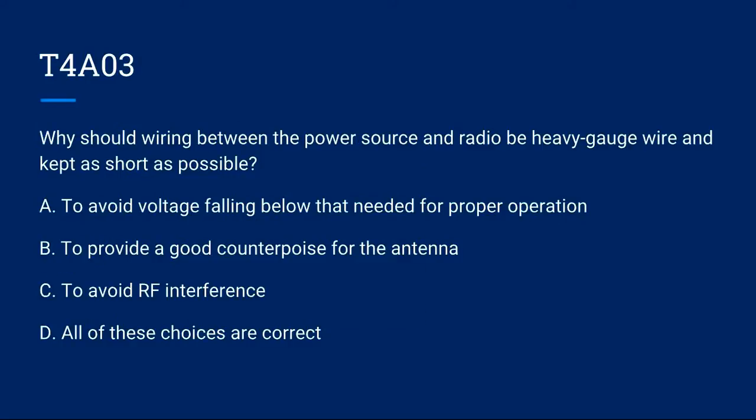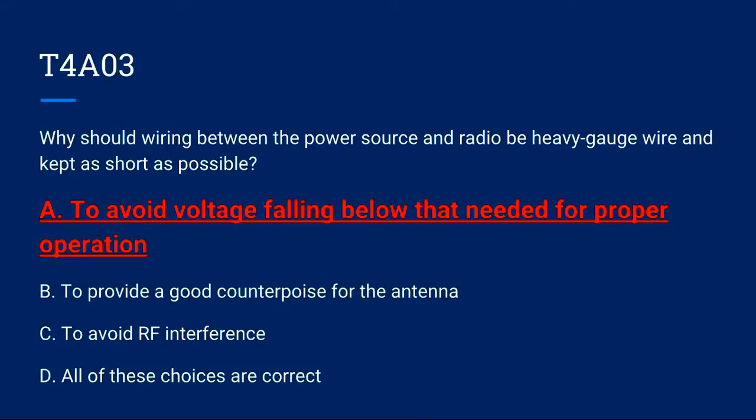T4A-03: Why should wiring between a power source and radio be heavy gauge wire and kept as short as possible? A. To avoid voltage falling below that needed for proper operation. B. To provide a good counterpoise for the antenna. C. To avoid RF interference. Or D. All of these choices are correct. The correct answer is A. To avoid voltage falling below that needed for proper operation.